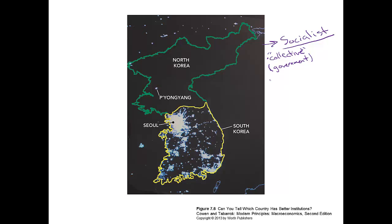North Korea has government ownership and management of land and capital. To a large extent, labor as well — citizens in North Korea do not have individual freedom to accept or reject jobs, to move about the country, or to invest in their own human capital formation. This is what it means to not have a free country. The lack of private individual ownership of land and capital is critical. What's it called when you don't own your own labor and somebody else can tell you what to do even if you don't want to? That's right — it's called slavery.